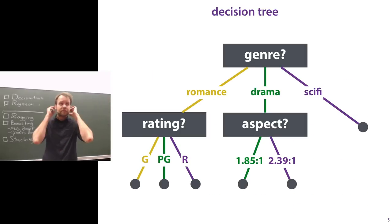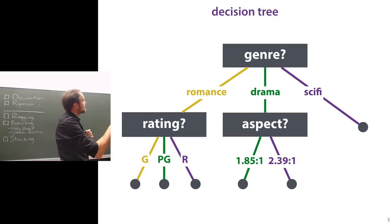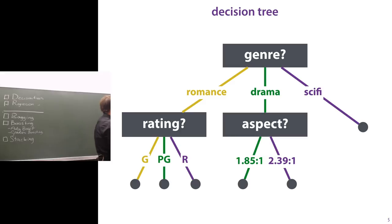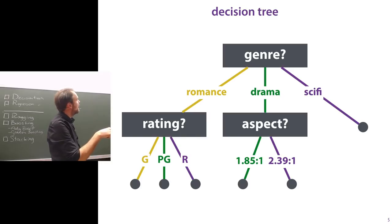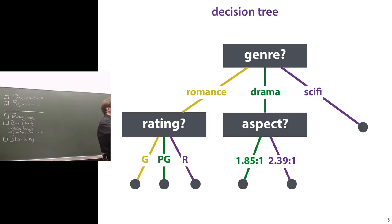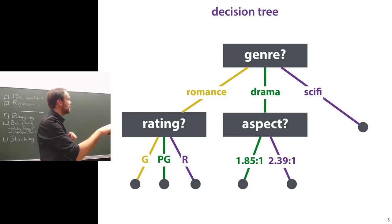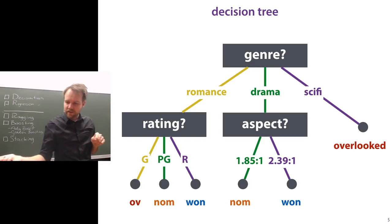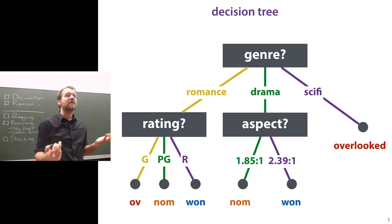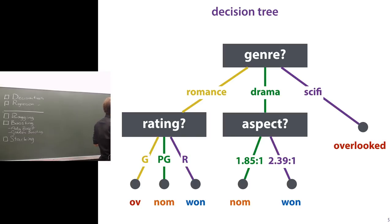A decision tree has nodes (rectangles) where at every node it picks a feature and asks what the value of that feature is. At the root node it asks: what is the genre of your movie? If it's romance, you go down one edge; if drama, another; if sci-fi, another. Say it's romance — then it asks the rating. If it's a PG-rated romance, you go to a leaf node which outputs the predicted class label — in this case, nominated but won't win.